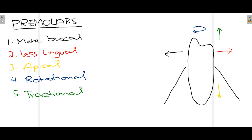Mandibular premolars are among the easiest teeth to extract — they have conical, single roots. Place the forceps beaks as apically as possible. Apply more buccal than lingual force since the buccal bone is thinner. Use apical force to move the center of rotation apically. Rotational force is also applied since most cases have a single conical root with no bifurcation. Finally, traction force is used to lift the tooth out of its socket.